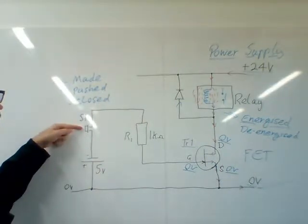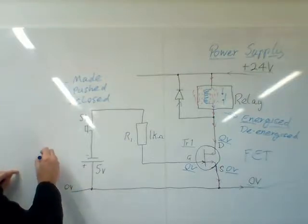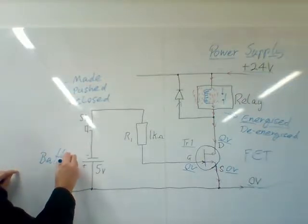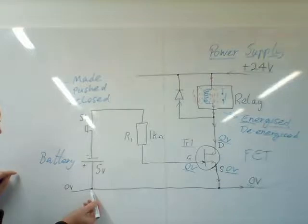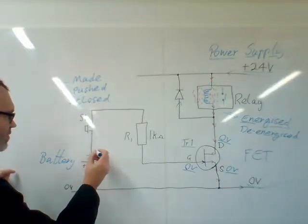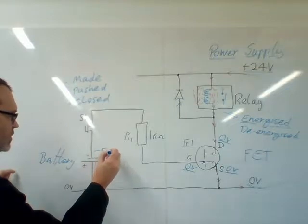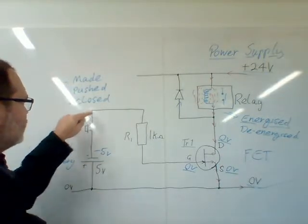Here we've got a battery, that's a circuit symbol for a battery, but the odd thing about it is they've connected the positive plate of the battery to the zero volt line. So we're going to find minus five volts here because it's connected to the negative plate.